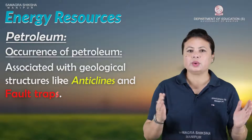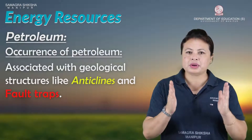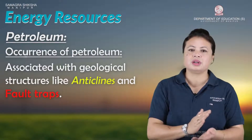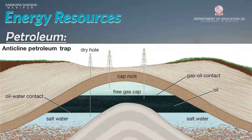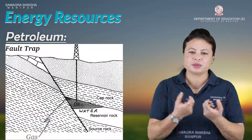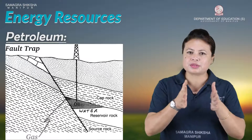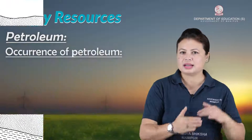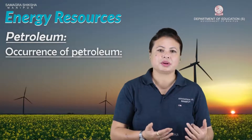There are anticlines and fault traps. Anticlines are the folding of landmasses — an upward fold where petroleum gets trapped. Fault traps are formed by the tearing of landmasses moving away from each other, and petroleum deposits are associated with these structures.